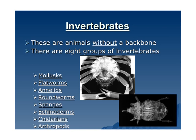Here are the animals that you need to learn this quarter that do not have a backbone. We're going to learn about eight groups of invertebrates: mollusks, flatworms, annelids, roundworms, sponges, echinoderms, cnidarians, and arthropods.